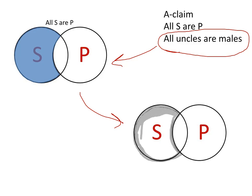So the A claim is a claim that talks about the inclusion of the members of one class and another class. In particular, the inclusion of the S class and the P class. Every member of the S class, all S, are members of the P class.